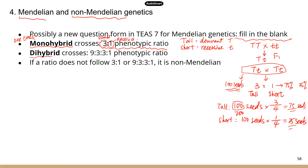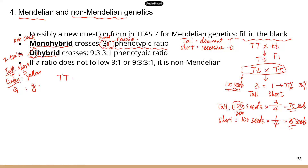The next one is dihybrid. Di means two, so now we're talking about two traits at the same time — a little more complicated. Let's say we're looking at tall versus short, but also the color of the seeds, which is green versus yellow. Tall and green are the dominant traits, and short and yellow are the recessive traits. Again, the first generation parents are homozygous: big T big T big G big G crossed with little t little t little g little g. This gives you the F1 generation: big T little t, big G little g.